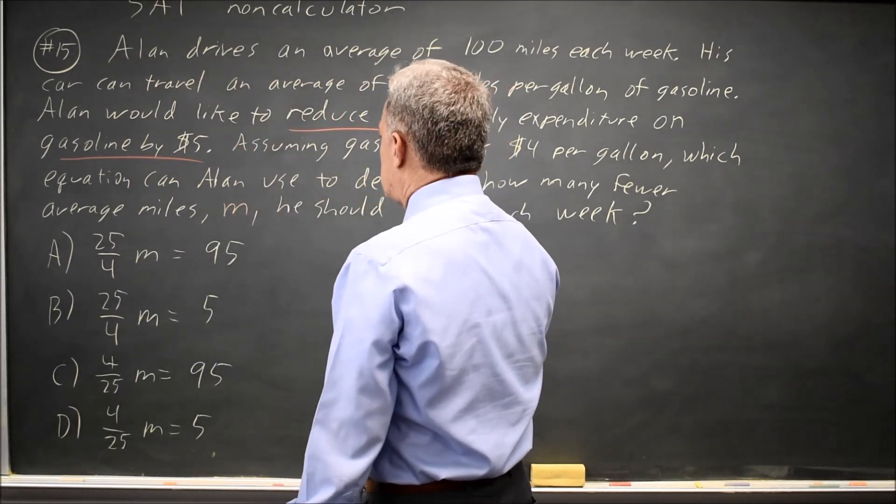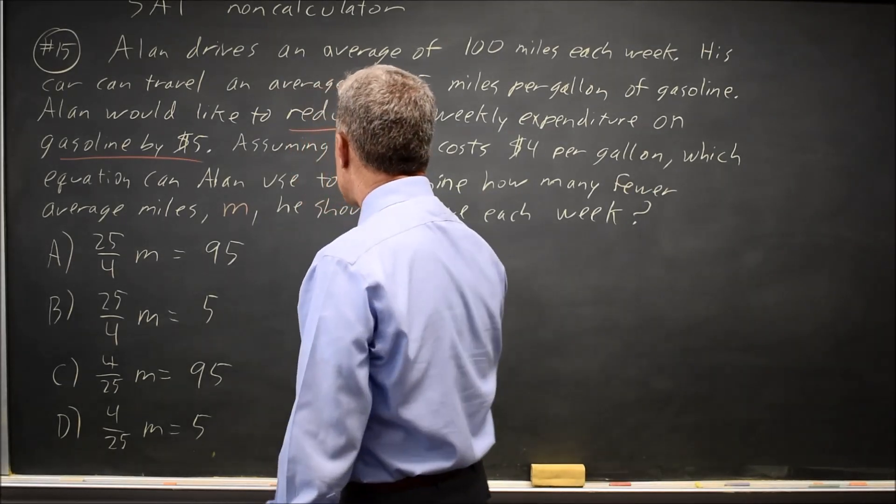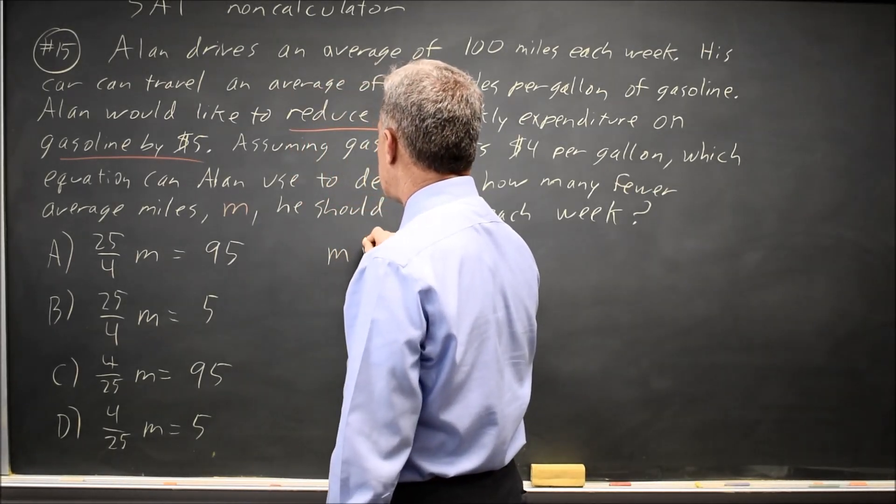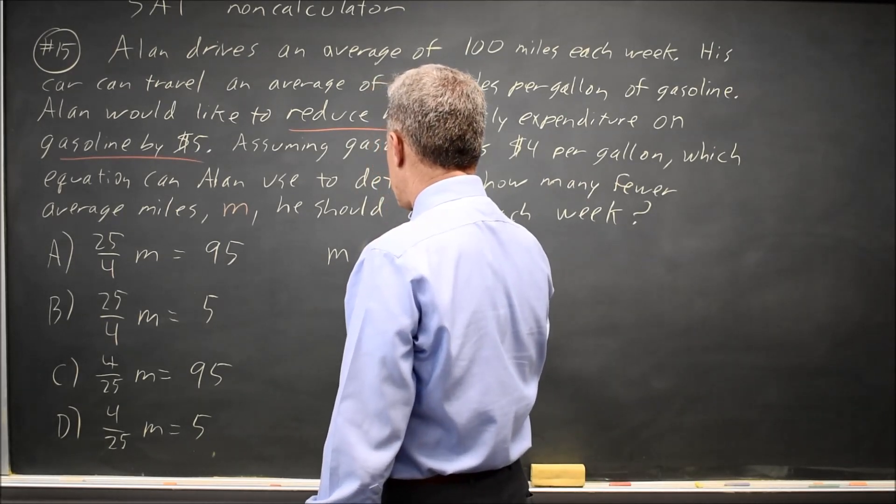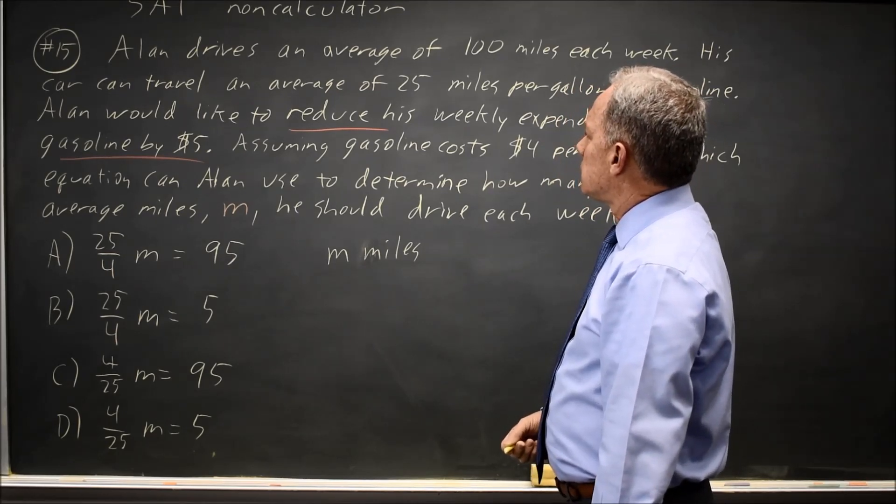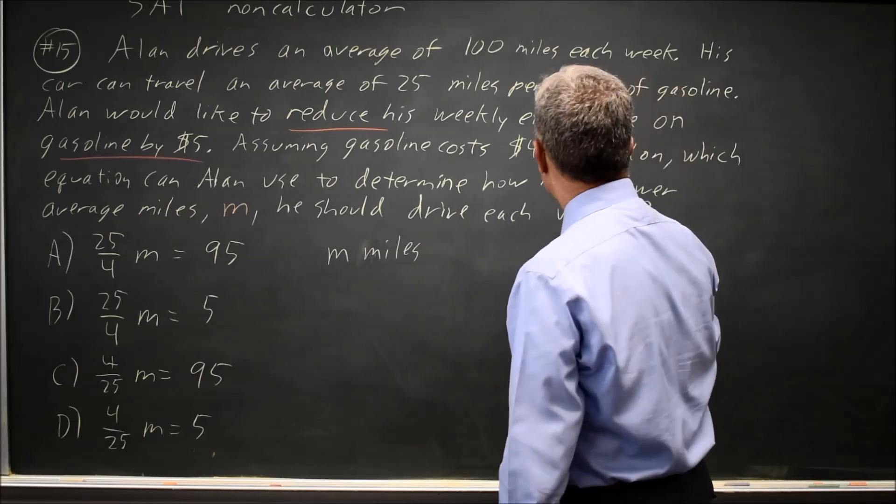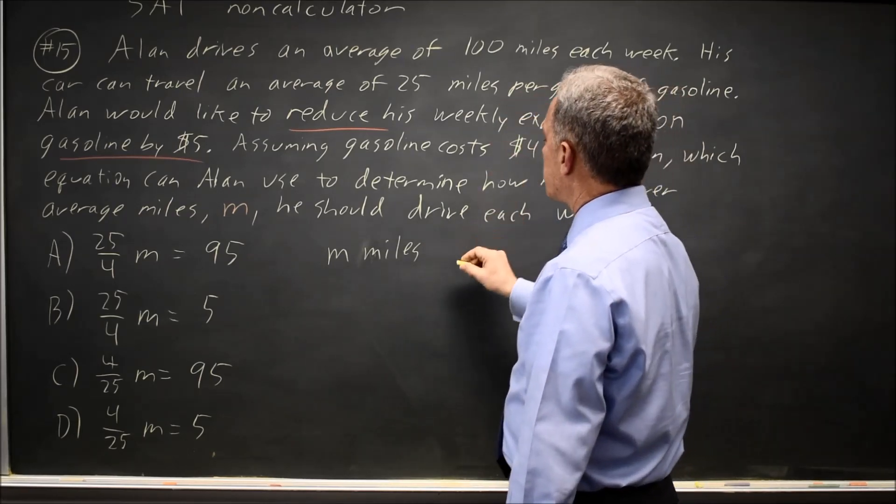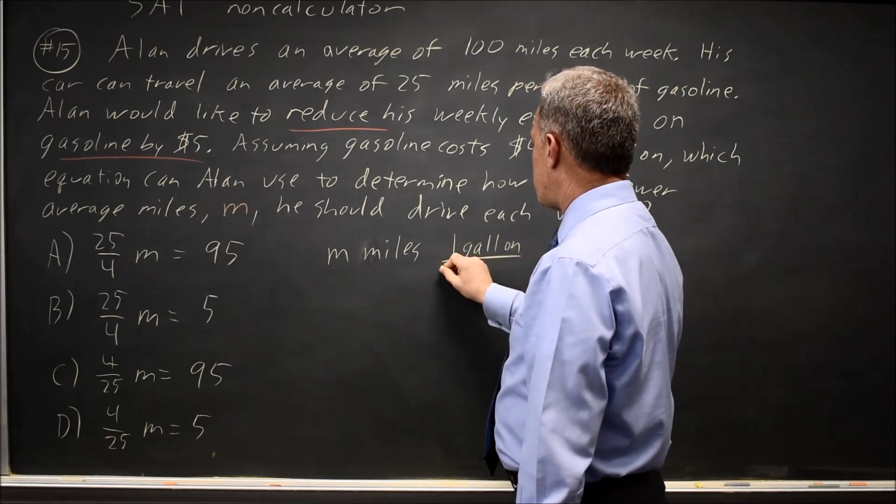M is how many fewer average miles. So if M miles, if I multiply that by miles per gallon, the miles won't cancel. But if I flip 25 miles for one gallon and write that as one gallon over 25 miles...